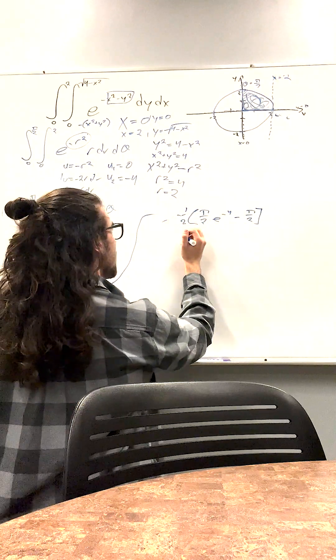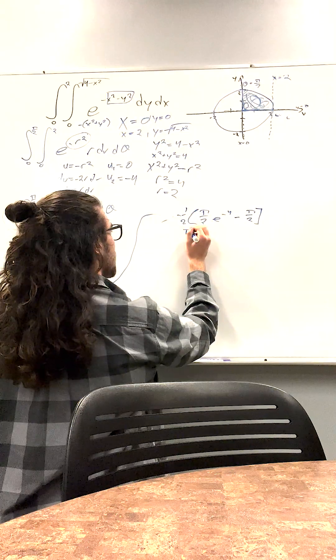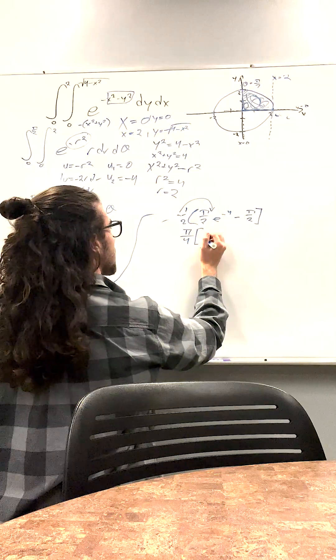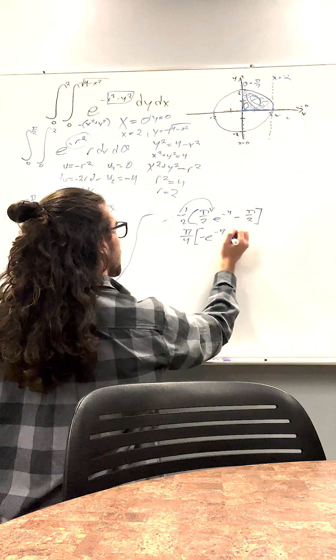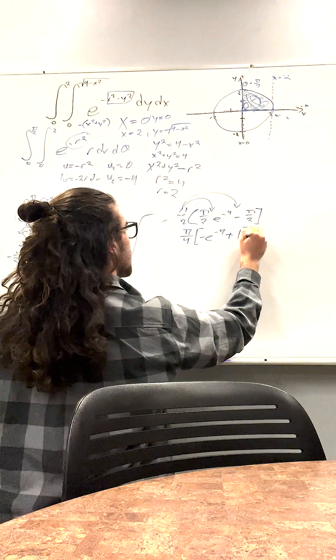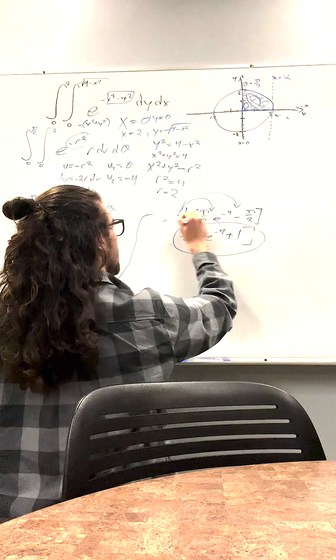And basically from here we can just simplify a little bit. So it's going to be pi over 4. Going to bring that negative inside. So we're going to get negative e to the negative 4 plus 1. This is our answer.